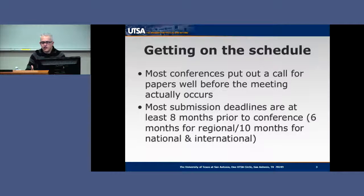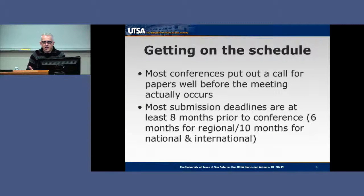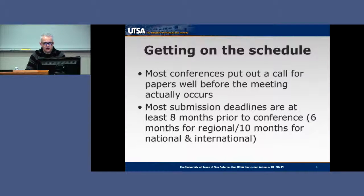So how are you going to get on the schedule of these conferences? Most conferences put out a call for papers well before the conference occurs. You're going to want to be searching for those through associations you belong to or that your discipline is affiliated with, and put in a proposal to be a presenter. Most submission deadlines are at least eight months prior to the conference — best practices suggest six months for regional and ten months for international and national conferences.